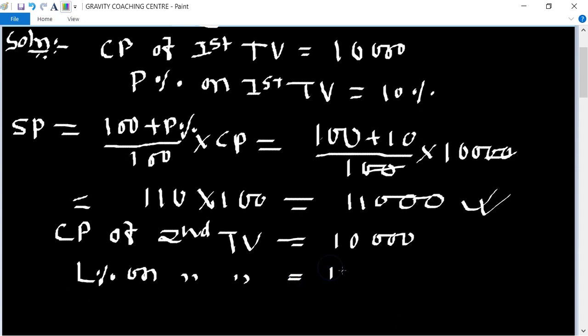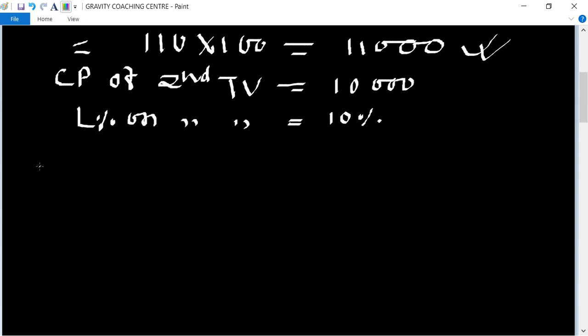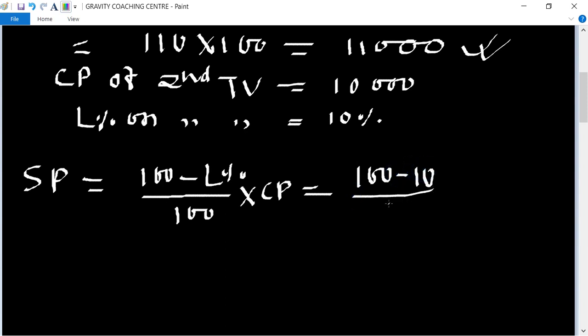Rupees 10,000. So therefore SP equals 100 minus loss percent upon 100 multiply CP.